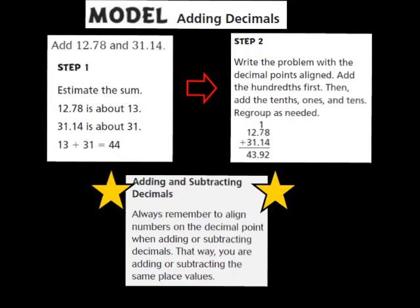When you estimate, you're going to round each addend to the nearest whole number and then add to estimate the sum. So, 12 and 78 hundredths is about 13, and 31 and 14 hundredths is about 31. Now I'm going to add those two numbers together: 13 plus 31 gives me 44. So my estimated answer is about 44, and my exact answer should be close to that.